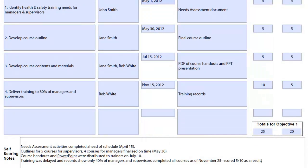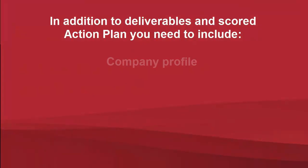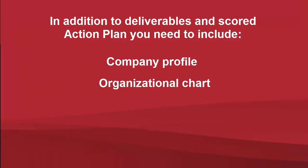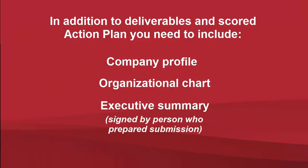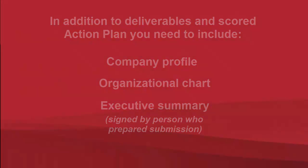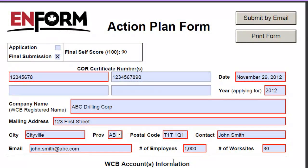Once the deliverables are ready to email and your scoring is complete, there are a few more things you'll need in your submission package. You'll need a company profile, an organizational chart, and an executive summary of the action plan. This summary needs to be signed by the person who prepared the submission.